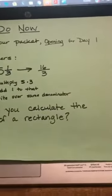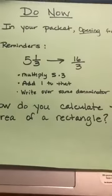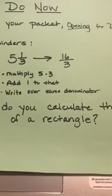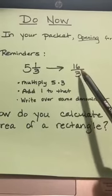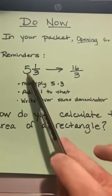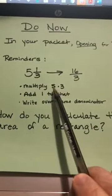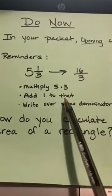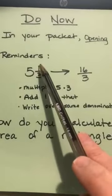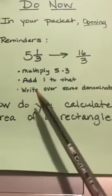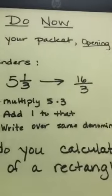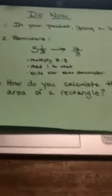One hint was to change mixed numbers to improper fractions. I gave an example: five and one-third. The way to convert it is to multiply the whole number by the denominator — five times three — then add the numerator: fifteen plus one is sixteen. Write it over the same denominator, so you get sixteen-thirds. That was the reminder I gave you on the Do Now.